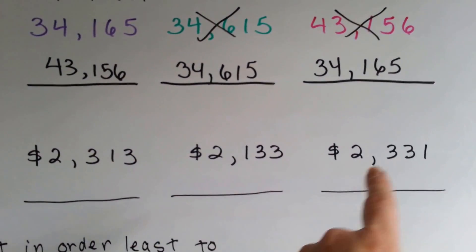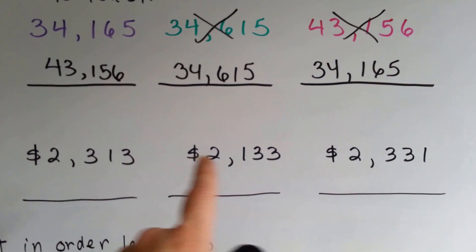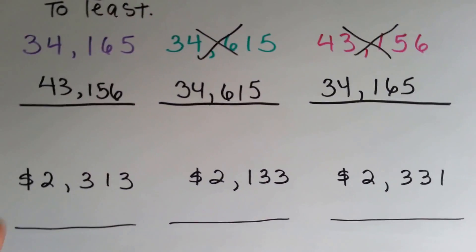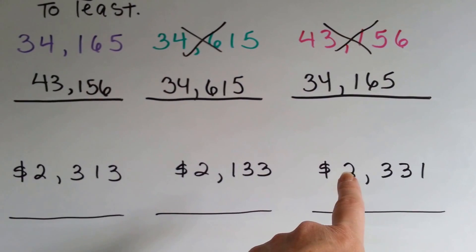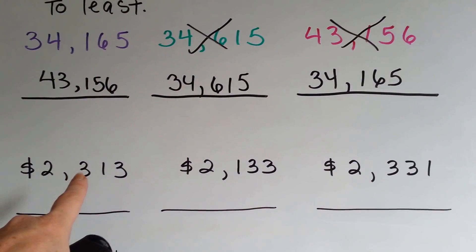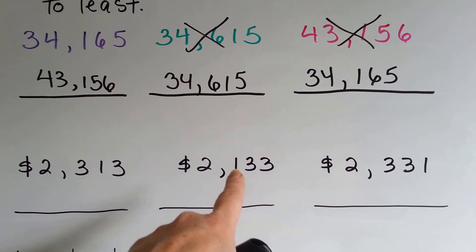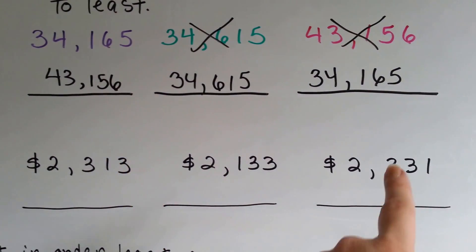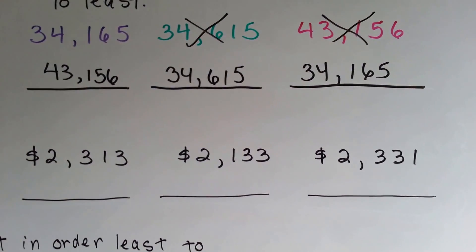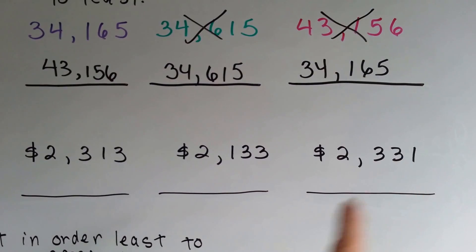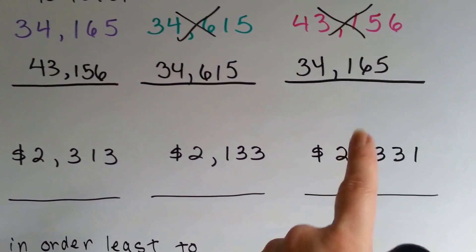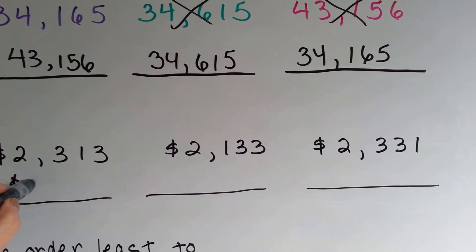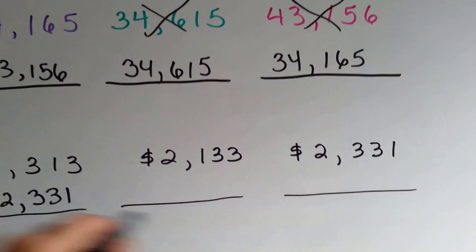Now let's look at this money. Which amount of money is the largest? They all have four place values, and they all have twos, threes, and ones in them. This one has two thousand, this one has two thousand, and this one has two thousand — that's not going to help us. This one has a three in the hundreds place; this one only has a one; but this one also has a three in the hundreds place. So we know it's not the one with only one in the hundreds place. If you said this one, you're right, because it's got a three in the tens place and this one only has a one. So this one is biggest: $2,331.